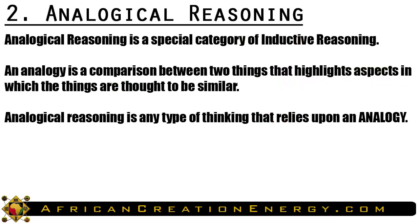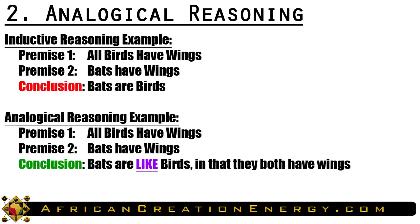The second form of reasoning we want to discuss is called analogical reasoning. Analogical reasoning is a special category of inductive reasoning. An analogy is a comparison between two things that highlights aspects in which they are thought to be similar. Thus, analogical reasoning is any type of thinking that relies upon an analogy. Consider the inductive argument: All birds have wings. Bats have wings. Therefore, bats are birds. While the conclusion is false, it is based on similarity between two things. A more accurate analogical argument would conclude: bats are like birds in that they both have wings.